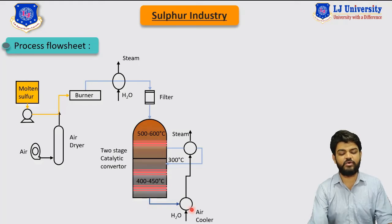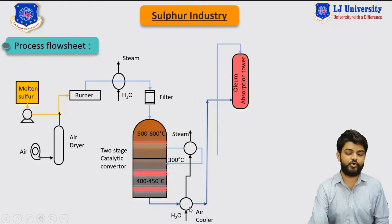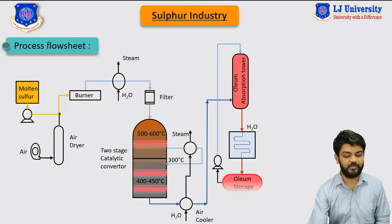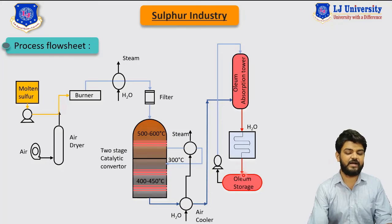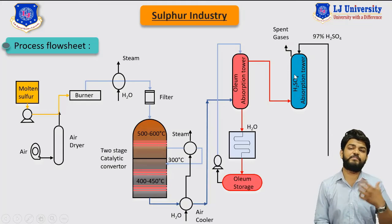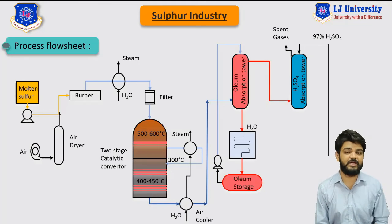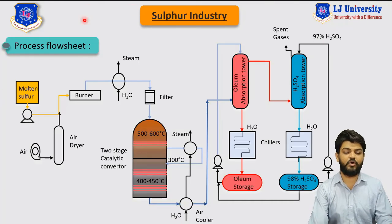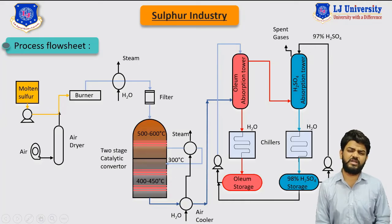The product from the second reactor is cooled with water, then sent to the oleum absorption tower where SO3 and H2SO4 are fed together, and absorption takes place to produce oleum. The oleum is condensed into liquid and stored in a storage tank. The product gas from the oleum absorption tower is sent to the H2SO4 absorption tower, where water is added to produce two moles of H2SO4, which is condensed into liquid and stored. This is the entire flow sheet of the double contact double absorption process, also referred to as the contact process.